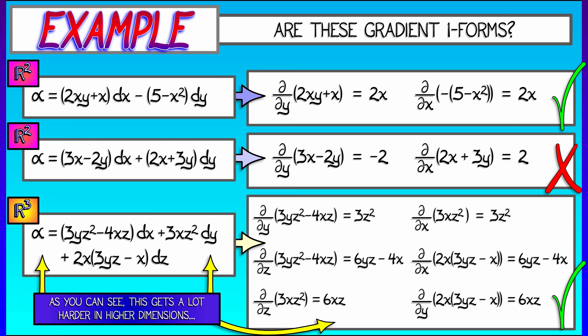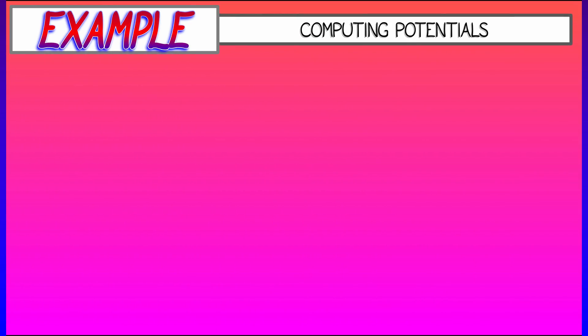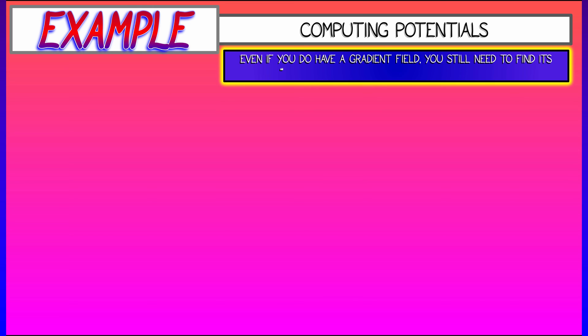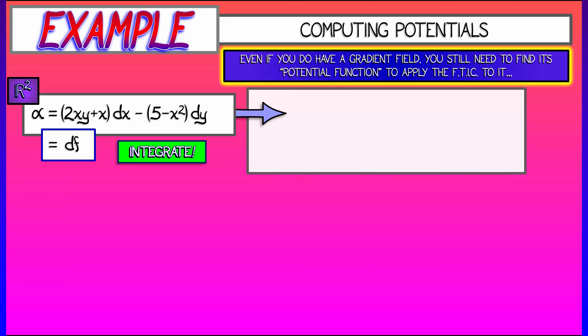Okay, well, that's a lot of work. And even once you've done that, even once you've shown that it's a gradient, well, what is it the gradient of? How do we get that potential function f so that we can apply the independence of path theorem? Well, let's see in the context of an example. Let's start with that one form on R^2: (2xy + x)dx - (5 - x²)dy, that thing that we know is a gradient one form on R^2. I know it's of the form df for some f. And that means, what do I do? Well, I integrate.